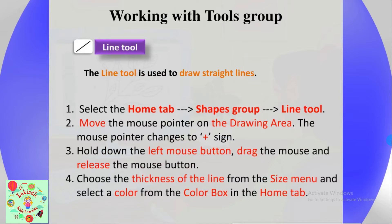The first tool we are going to study is the line tool. The line tool is used to draw straight lines. To select the line tool, click on the Home tab, then find the Shapes group, and click the line tool. Move the mouse pointer to the drawing area — the pointer changes to a plus sign. Hold down the left mouse button, drag, and release.